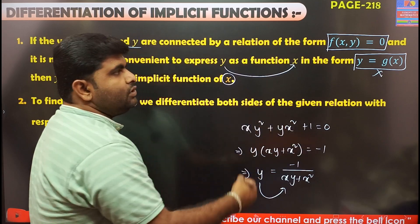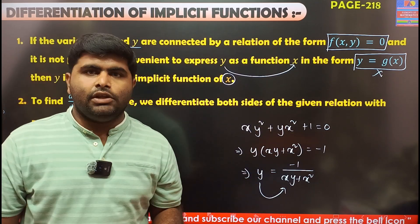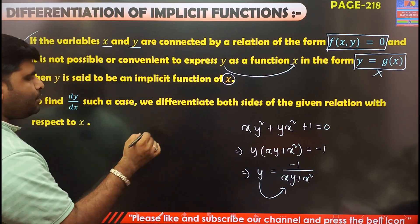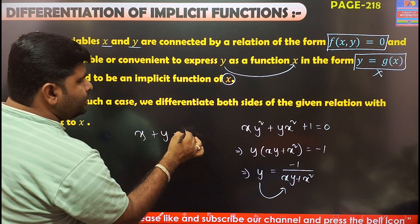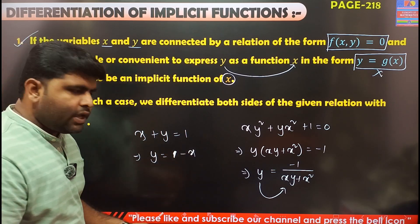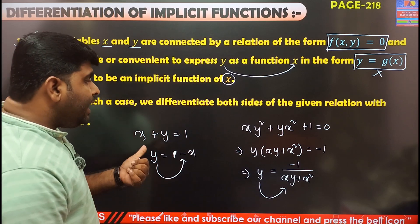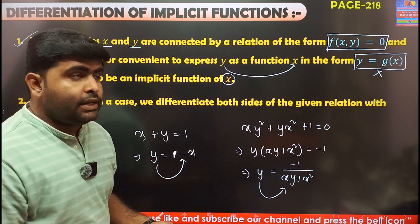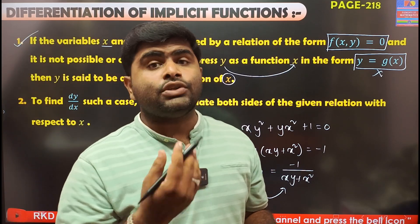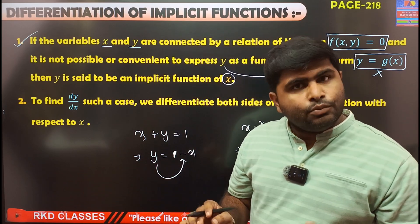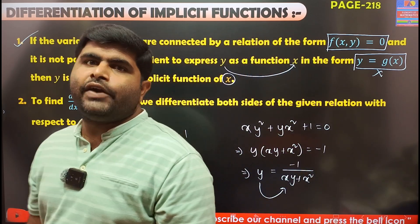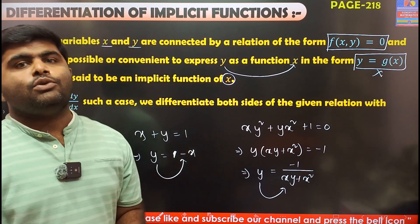So y is an implicit function of x, and x is an implicit function of y. For the first definition — where is the implicit function? We have a question: x plus y is equal to 1. So y is equal to 1 minus x, or x is equal to 1 minus y. So we can write the explicit function. What is the implicit function versus the explicit function in this question?